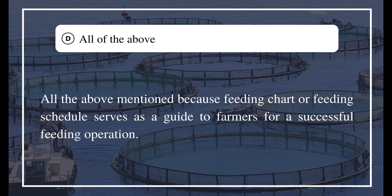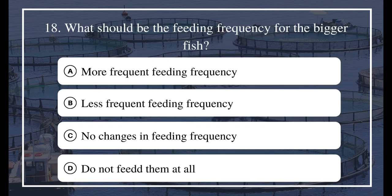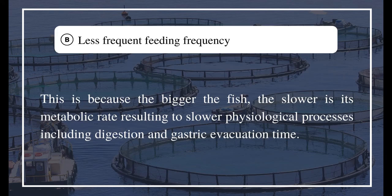All of the above, because a feeding chart or feeding schedule serves as a guide to farmers for a successful feeding operation. Question 18: What should be the feeding frequency for the bigger fish? A) More frequent, B) Less frequent, C) No changes, D) Do not feed them at all. The answer is B) Less frequent feeding frequency. This is because the bigger the fish, the slower its metabolic rate, resulting in slower digestion and gastric evacuation time.